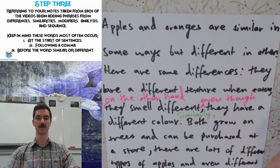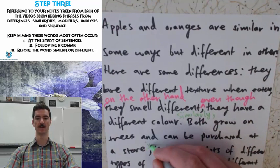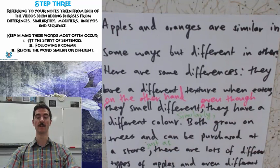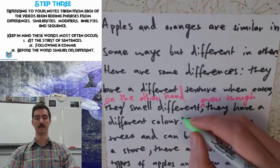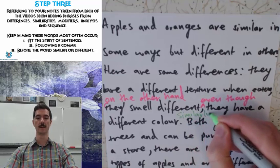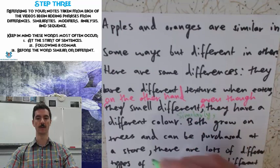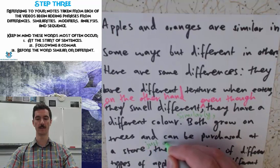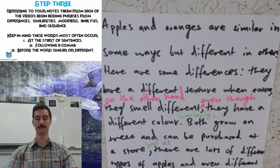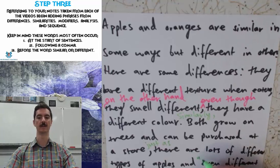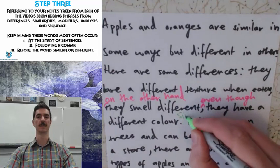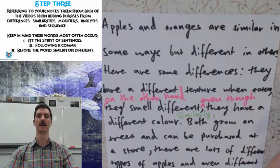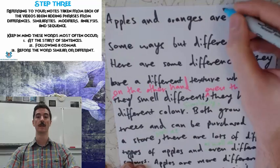For similarities, we're looking at the sentence that discusses similarities, which says: 'Both grow on trees and can be purchased at a store. There are lots of different types of apples and even different colors.' What I've added is 'similarly,' followed by a comma, at the very start of the sentence, and 'just as' before 'there are,' and I've replaced 'even' with 'as well as.' This makes it read: 'Similarly, both grow on trees and can be purchased at a store. Just as there are lots of different types of apples, as well as different colors.' You can see how it flows much more nicely and clearly connects the ideas, rather than just being provided with a list.